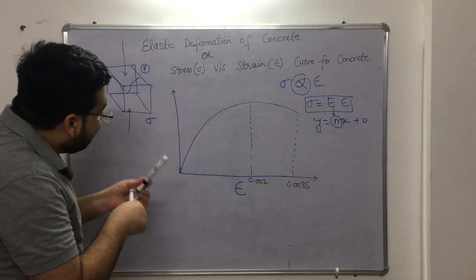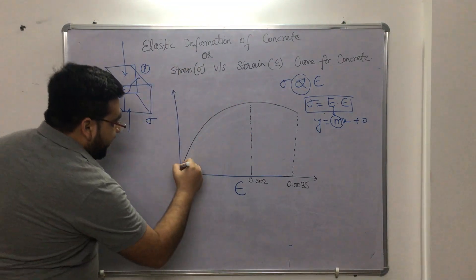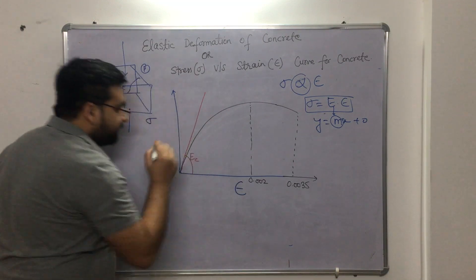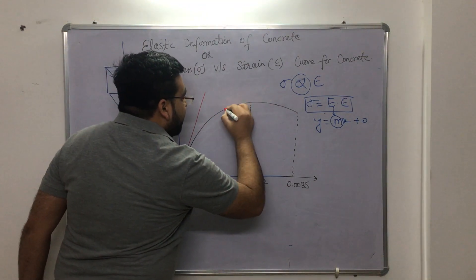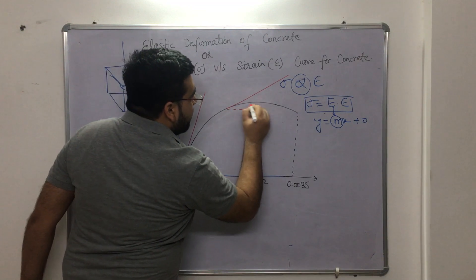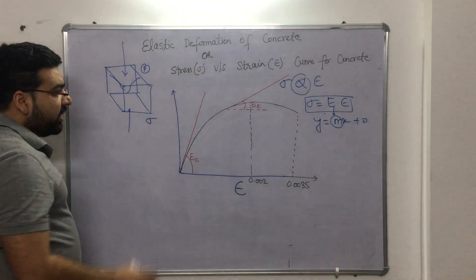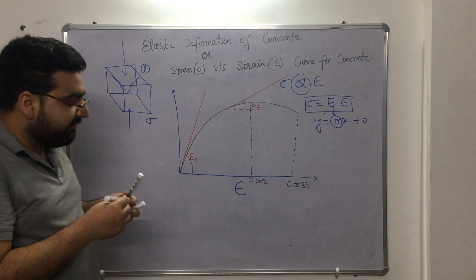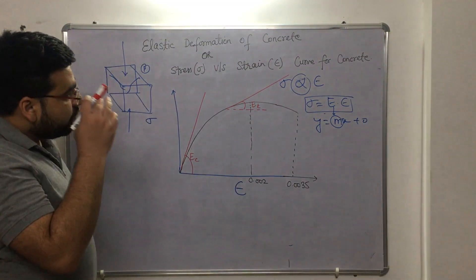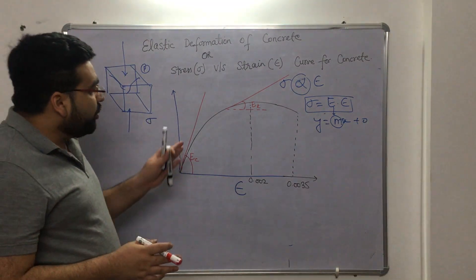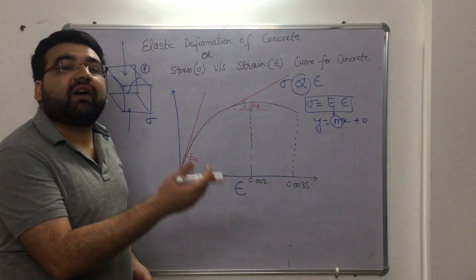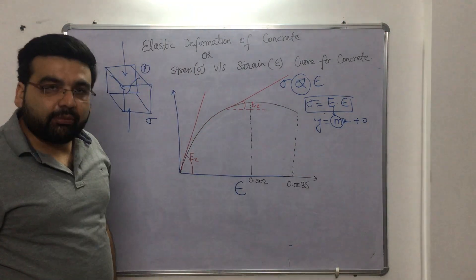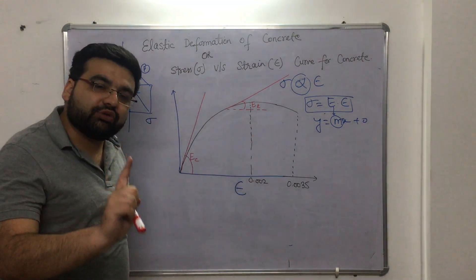At every point of this realistic curve, E has a different value. Here the slope gives you one E, say Ec; at this other point you draw a slope and get a different E, say Et. So at every point you get a different value, making it very difficult to interpolate a single modulus of elasticity from this curve. Because of this difficulty, the IS code has modified this curve into a simpler curve, so that we can easily extract information from the graph.